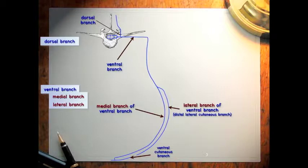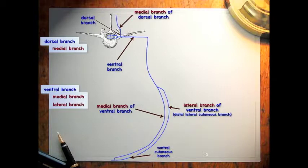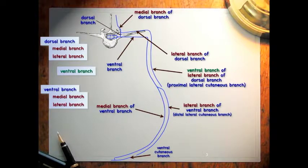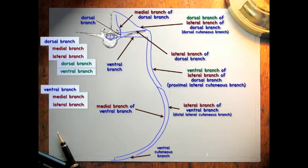Our dorsal branch is going to have a medial branch and a lateral branch. That lateral branch is also going to have a ventral branch as well as a dorsal branch. So our ventral branch has a medial branch and a lateral branch; our dorsal branch has a medial branch and a lateral branch, and that lateral branch gives off a dorsal and a ventral branch as well.